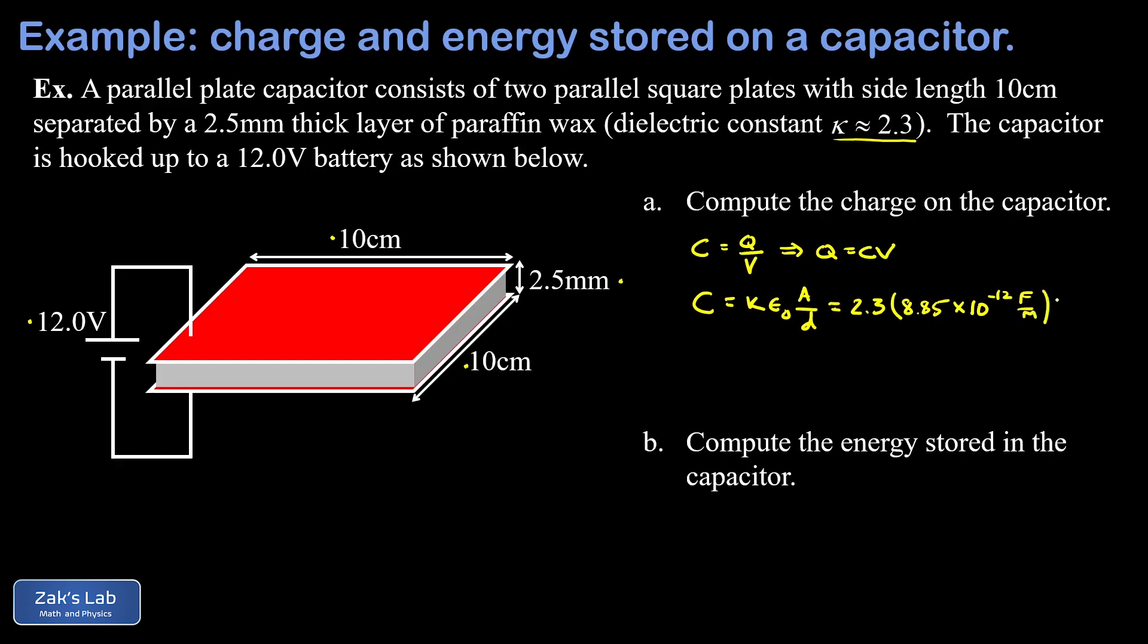The area of the plates, we have to convert to SI units here, so 0.1 meters squared. And the distance between them also, we have to convert that to meters, and I'll write that as 0.0025 meters. And when we run the numbers on this, we get 8.142 times 10 to the negative 11 farads for the capacitance.